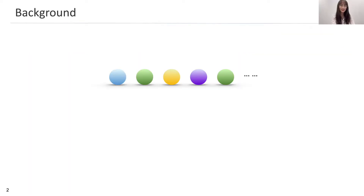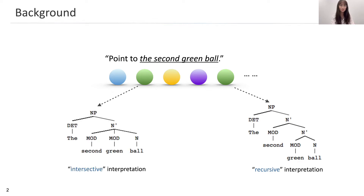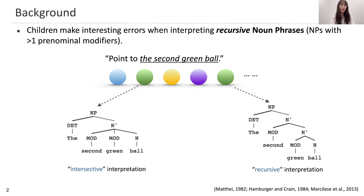Let's start with an example. Here are a sequence of colorful balls. If I ask you to point to the second green ball, which one would you choose? Most likely you'd say this one — the second among the green balls. But interestingly, sometimes children would point to this one instead — the second and green ball. The difference lies in the interpretation of recursive noun phrases, or NPs with more than one pronominal modifier. Linguists found that children sometimes make the intersective interpretation error, whereas adults prefer the recursive interpretation.